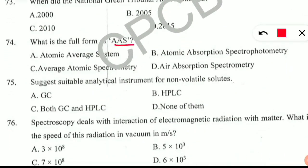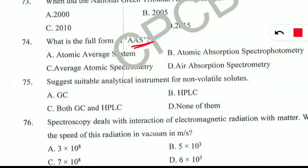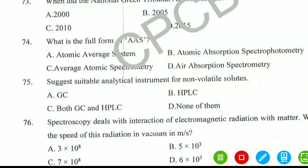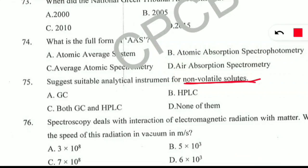Question 74: what is the full form of AAS? The correct option is B — Atomic Absorption Spectrophotometry, also called Atomic Absorption Spectroscopy. Question 75: suggest a suitable analytical instrument for non-volatile solutes. The options are GC (gas chromatography), HPLC (high performance liquid chromatography), both GC and HPLC, or none of them. The correct option is B — HPLC, which is suitable for non-volatile solutes.